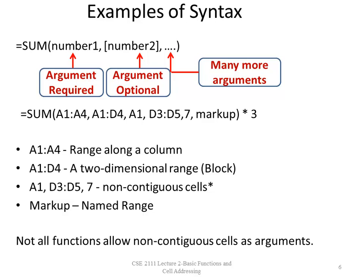Then I'm adding 7 to all of these, and then I'm adding something called 'markup.' Markup is called a named range — you can actually name a cell or group of cells, and when you name the cell you can use that name or the cell reference. In this case I'm using the name and I called it markup. Then the right parenthesis ends my argument list, and then it will sum all those values and multiply by 3.